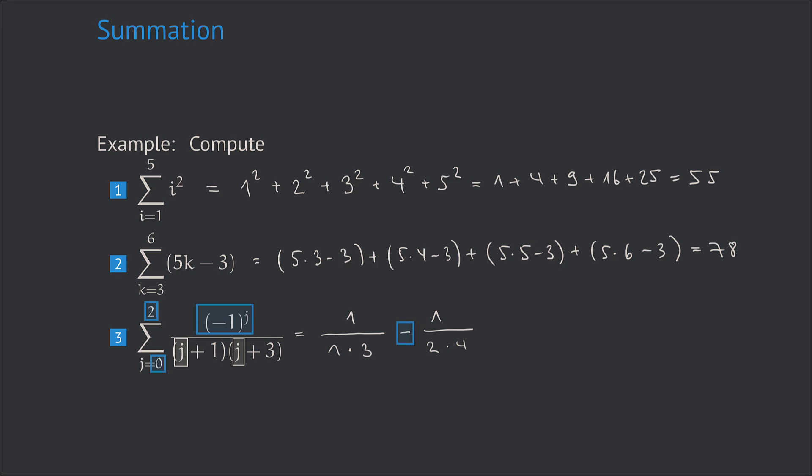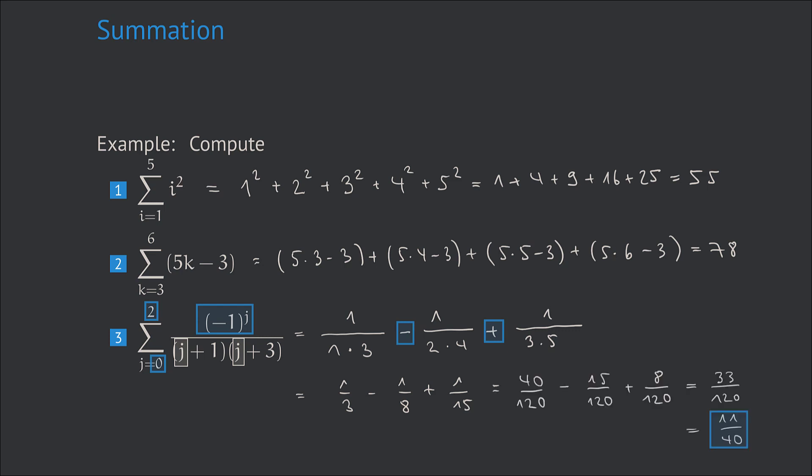Minus 1 to the power of 2 is plus 1. So the next summand will have a plus sign and the values in the denominator are 3 and 5. Simplifying this gives which taken to the common denominator gives the final result 11 over 40.